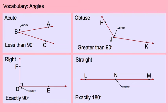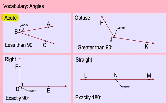Number one, acute angles are anything less than 90 degrees. We're measuring the inside of this angle, not the outside. The angle is made from two rays that come off the same point, and that point where the two rays come out of is called the vertex. We're going to be lining up part of our protractor with the vertex and the other part with one of the rays.